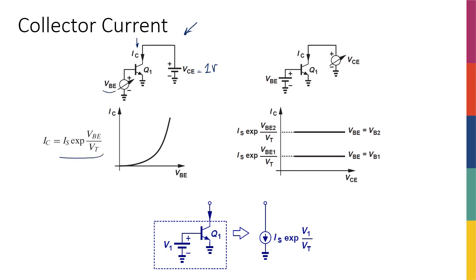Mathematically, I can see that IC is IS e to the power of VBE over VT, so if I draw IC, the collector current, versus VBE, I can see that there's an exponential relationship.